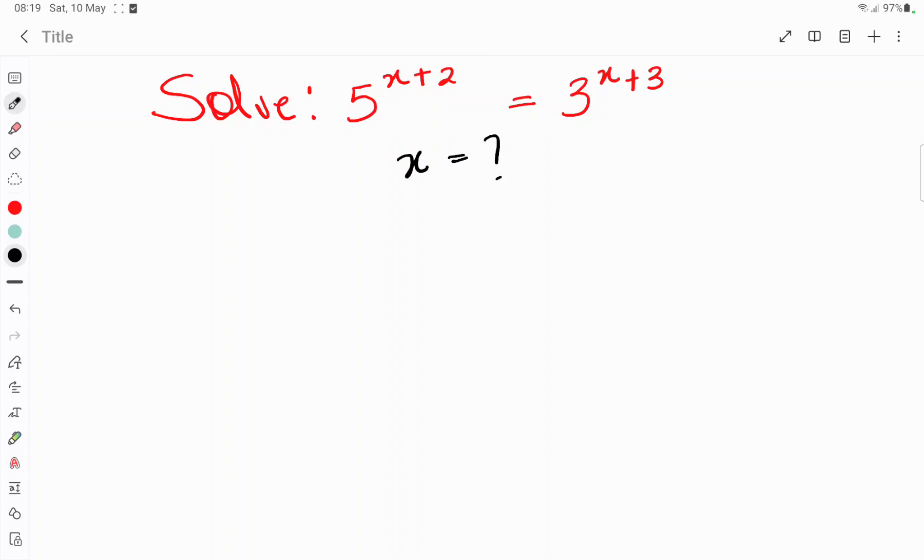We have 5 power x plus 2 equals 3 power x plus 3. The first thing we have to do when we have problems like this, you observe the base. These are the base, and these numbers at the top or expression at the top is called the power or we say the exponents. Observe one thing. The bases cannot be expressed to be the same. That is, we cannot express 5 and 3 to be the same.